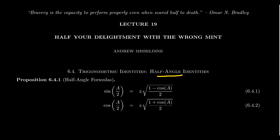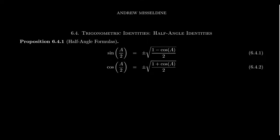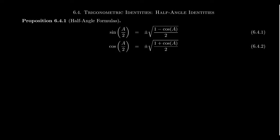The half-angle identities are essentially the double-angle identities worked backward. In this video, we're going to talk about the half-angle identities for sine and cosine. If you take sine of a over 2, where a is any angle — so you're considering half of that angle, going from a 30-degree angle to a 15-degree angle — sine of a over 2 equals plus or minus the square root of 1 minus cosine of a, over 2. This plus or minus is dependent upon the quadrant we're in: sine is positive in the first and second quadrant, negative in the third and fourth. Without knowing the quadrant, we can only get the absolute value, so we need information about the quadrant to proceed.